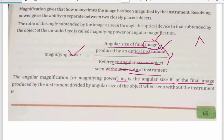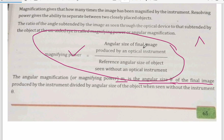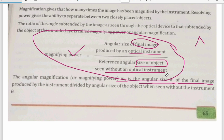The image seen through the instrument appears bigger. The size of the object will remain the same. Therefore, we can say: when we talk about an optical instrument, we use the final image; and when we talk about the size without the instrument, we use the size of the object.